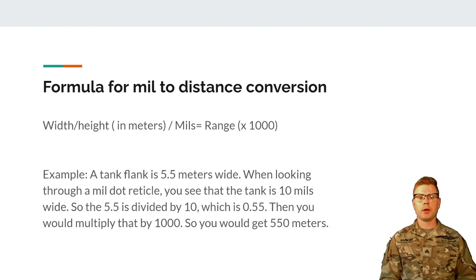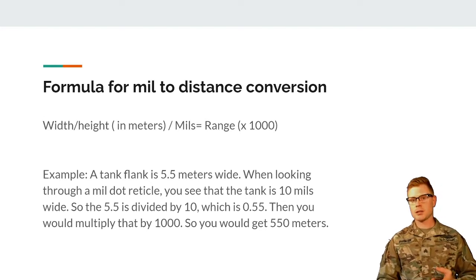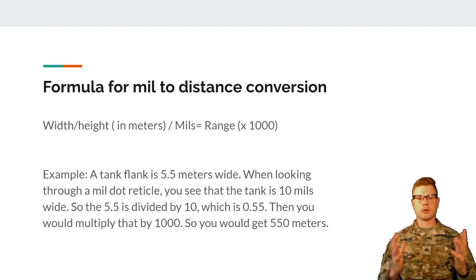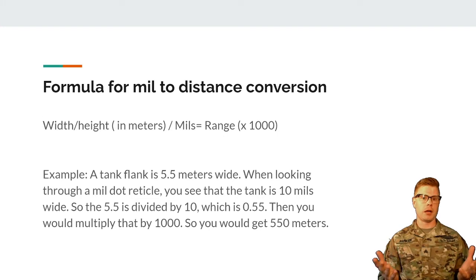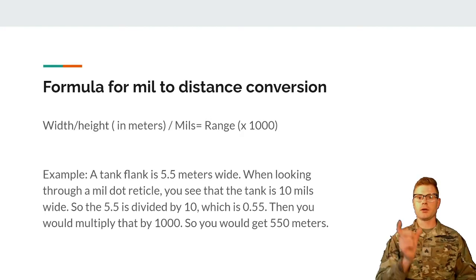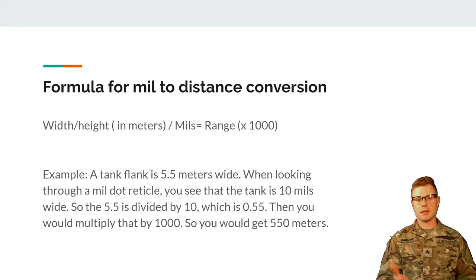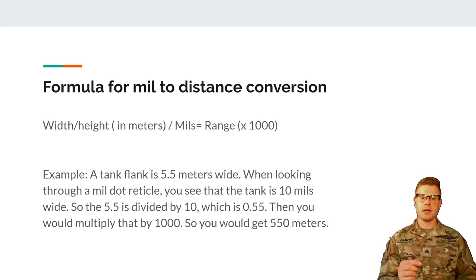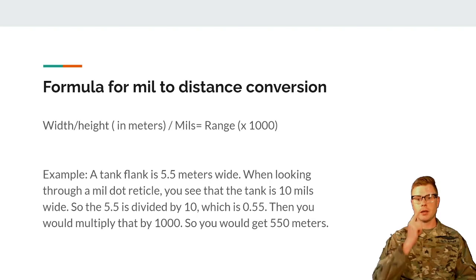There are a lot of ways to skin the cat — minute of angle, mils using inches, mils using centimeters — but we're just going to use meters to keep things simple. The formula is the width or height in meters divided by the mils you see on your reticle, and then multiply that number by 1,000 to get the range. For example, a tank flank is 5.5 meters wide. Looking through a mil dot reticle, the tank is 10 mils wide. 5.5 divided by 10 equals 0.55, multiplied by 1,000 gives you 550 meters.